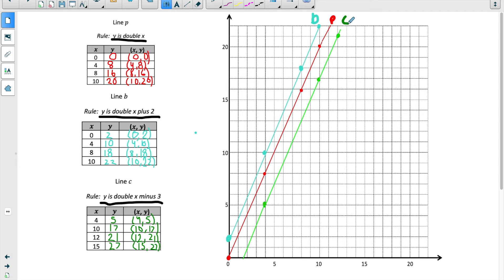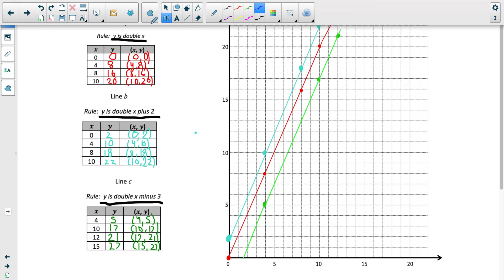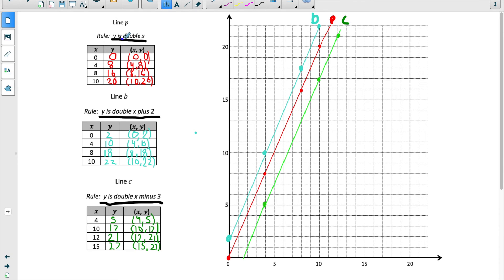If you notice, they are all parallel. And you might be asking yourself, well, Ms. Shames said if I multiply, then they're not parallel. But the thing is, in each of these, we multiplied by the same thing. We doubled x. We doubled x. And we doubled x. So all of them, what we multiplied by, was times 2.